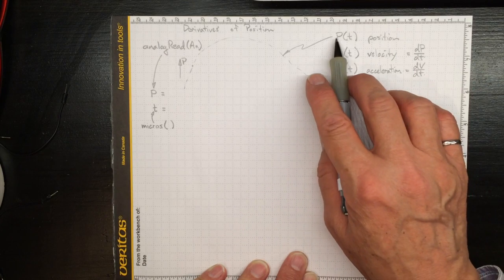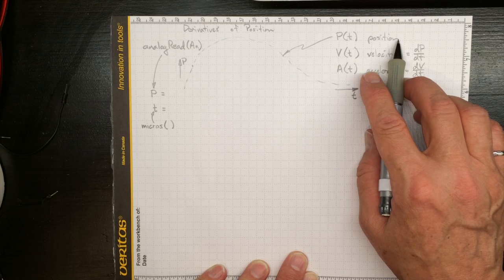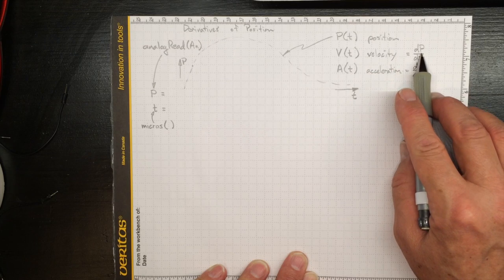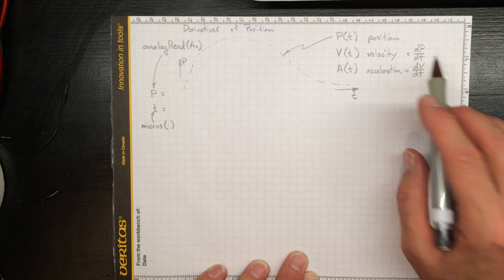Generally, we won't know this position function as a nice analytical function that we can do pencil and paper mathematics with. So we're going to have to approximate these derivatives, which is a lot easier for those of us who aren't very good at calculus.